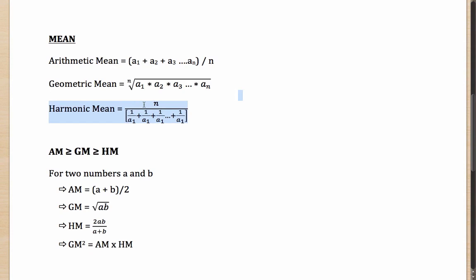For the harmonic mean, you write down n divided by the sum of reciprocals: 1/a1 + 1/a2 + 1/a3 till 1/an. You sum all of them up, reciprocate, and divide by n. That is what the harmonic mean is.